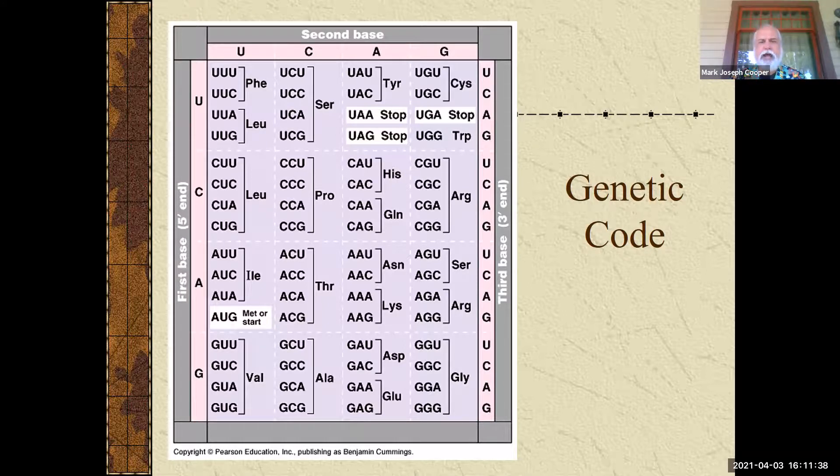You know, like arginine, here you can see there's actually six different codons for that. And then some have just four. So that's important. Okay, so I need you to be able to read the table. We're going to do this in lab, I'm going to do it on a quiz, going to do it on a test, where I'm going to ask you how something is coded.